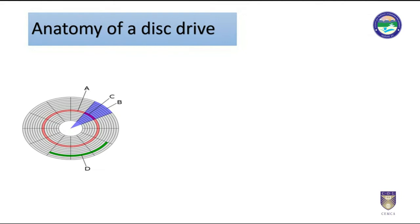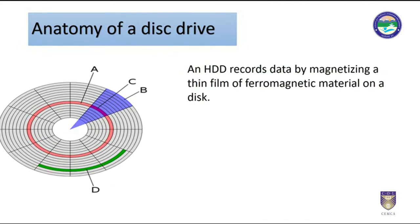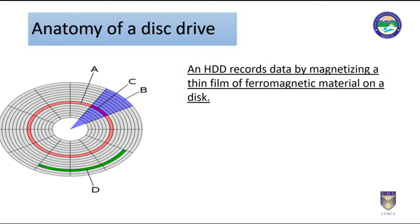A hard disk records data by magnetizing a thin film of ferromagnetic material on a disk. Sequential changes in the direction of magnetization represent binary data as bits. The data is read from the disk by detecting transitions in the magnetization. User data is encoded using an encoding scheme such as run length limited encoding, which determines how data is represented by the magnetic transitions.